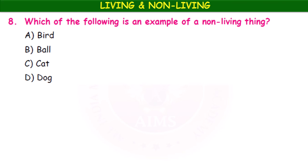Which of the following is an example of a non-living thing — bird, ball, cat, or dog? Bird, cat, and dog are living things. The non-living thing here is the ball.